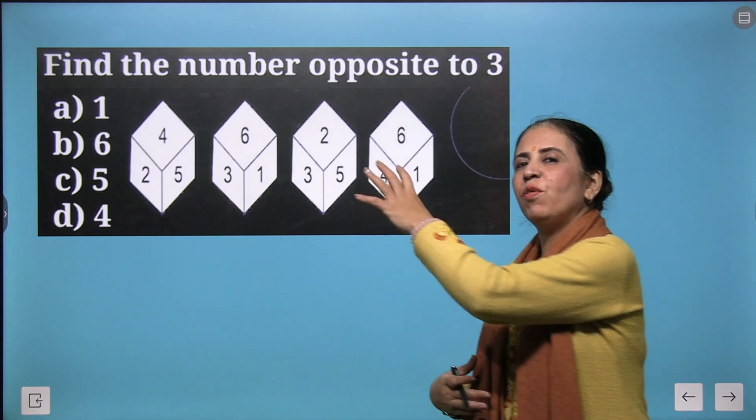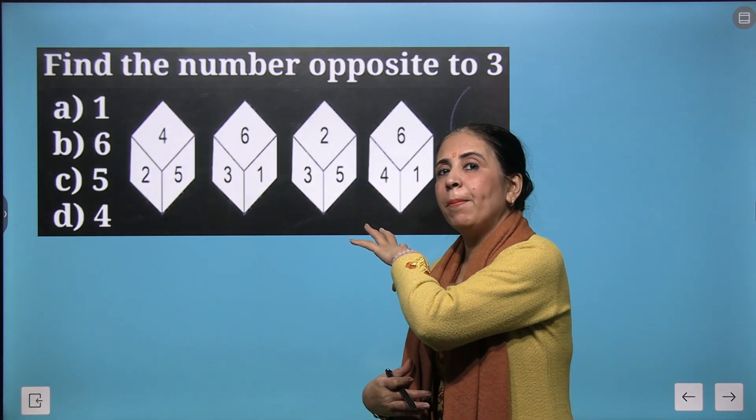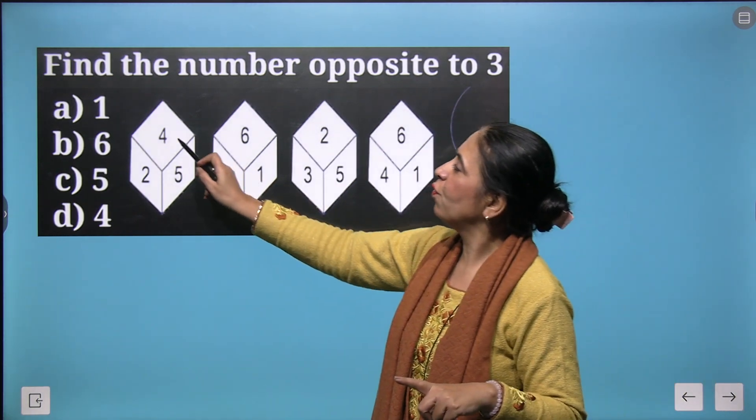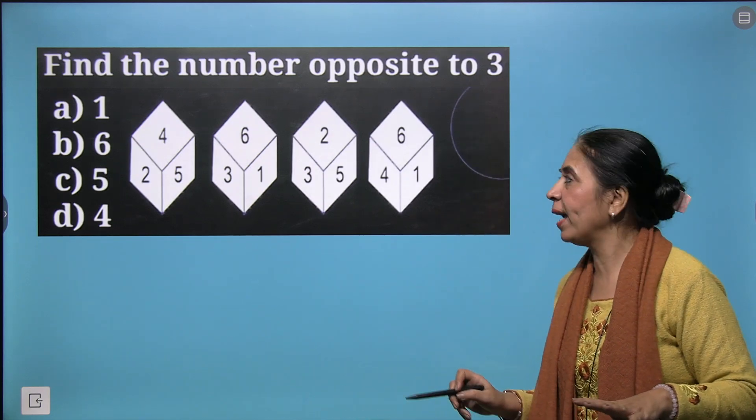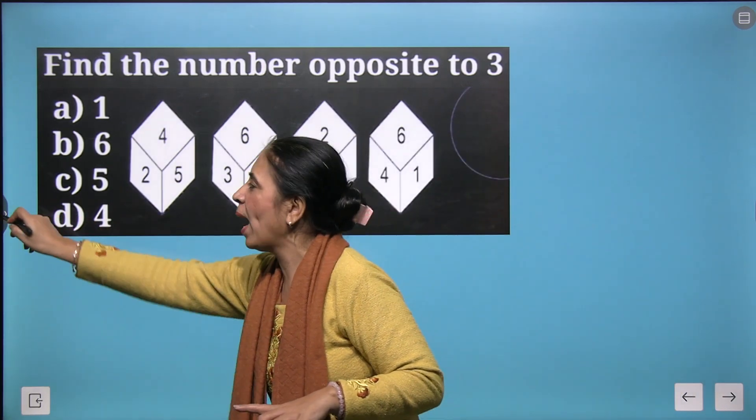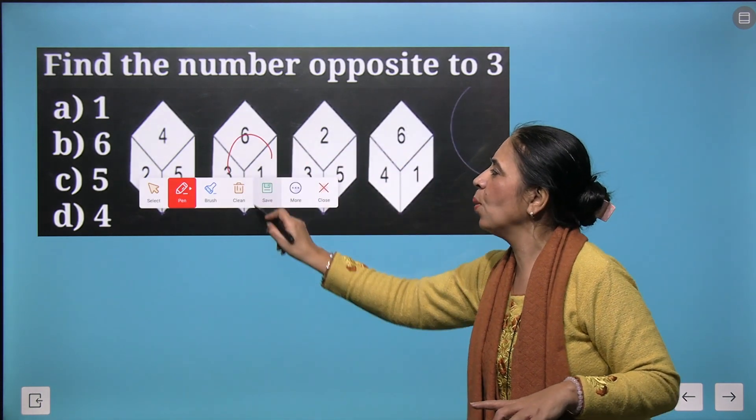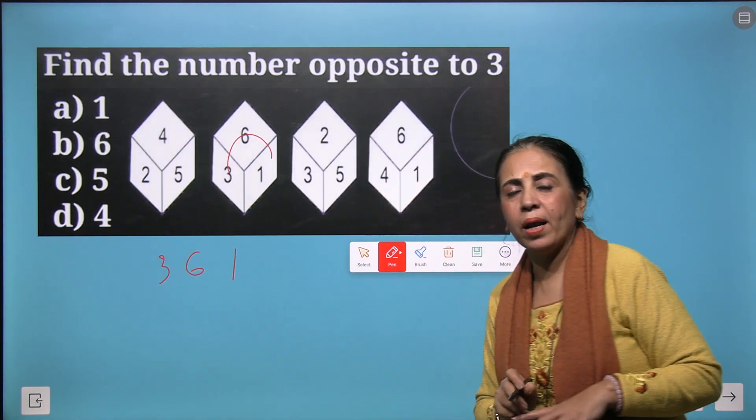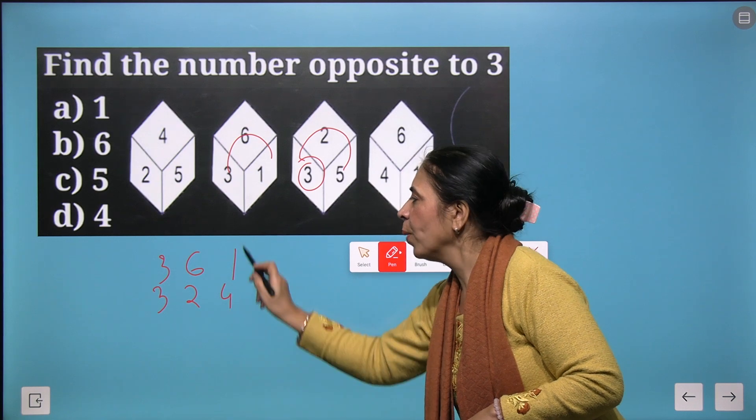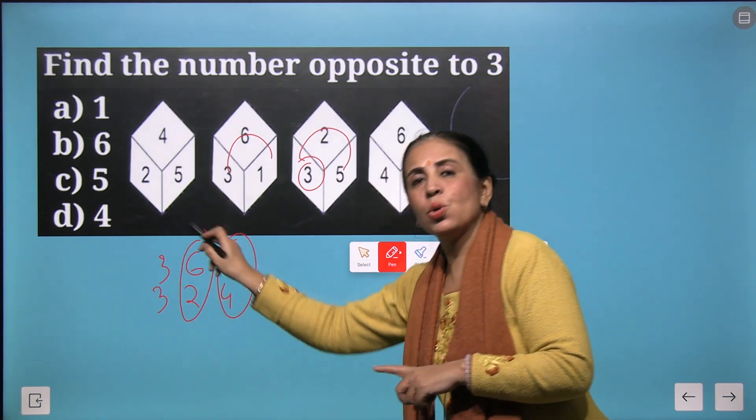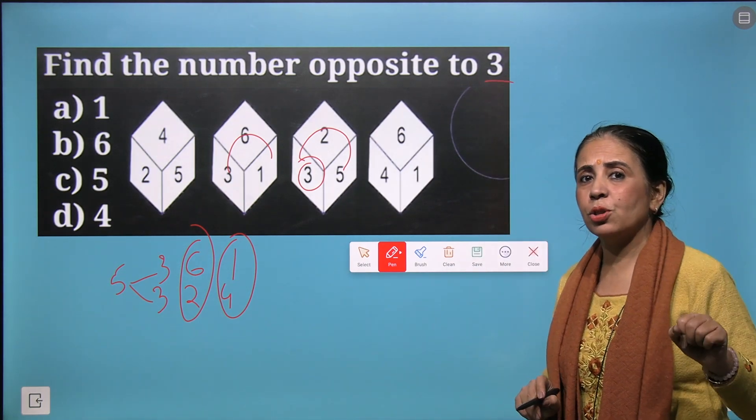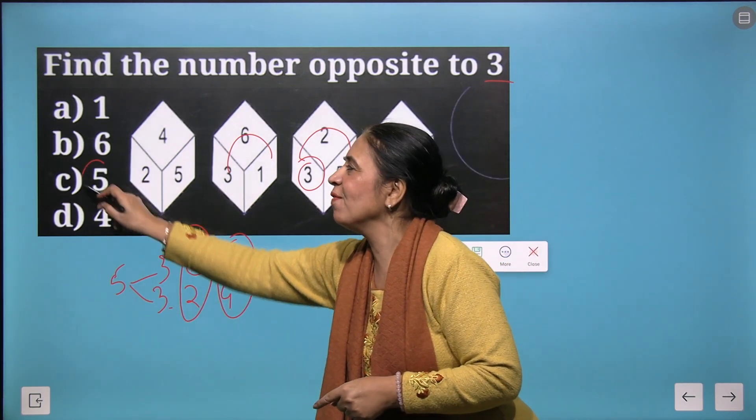Now we come to little more higher level. We have 4 dice here. So again we'll be implementing the rule that the dice should have only 1 number common. Looking at the first 2 dice. We have nothing in common, right? Look at the 2nd and the 3rd dice. Do you see something common? Yes, we do have 3 common. So starting from 3 we write down 3, 6 and 1 and from here start from 3 we write down 3, 2 and 4. We got 4 and 1 opposite sides, 6 and 2 are opposite sides and 3 and 5 are opposite sides. The question is what is opposite to 3? Yay! We got 5 as the correct answer.